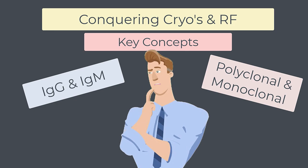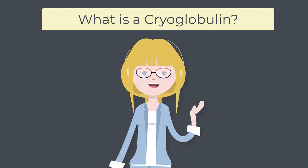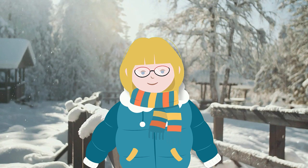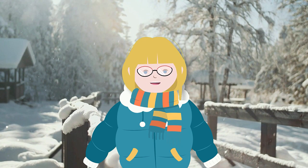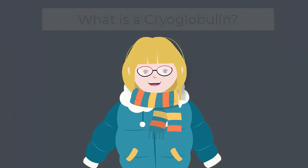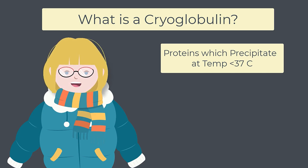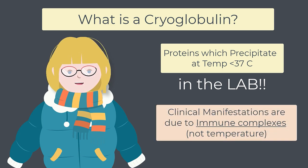Now let's see these concepts in action as we conquer cryoglobulinemia. What on earth is a cryoglobulin? Cryo is a word we associate with cold situations — think cryopreservation or cryotherapy. And globulin tells us that we are dealing with a protein such as an immunoglobulin. The definition of a cryoglobulin is a protein which precipitates at temperatures less than 37 degrees Celsius. It's important to understand that this definition refers to the behaviour of cryoglobulins outside the body in the lab. Their activity inside the body in vivo is not necessarily related to temperature at all, and usually has a lot more to do with immune complex formation.